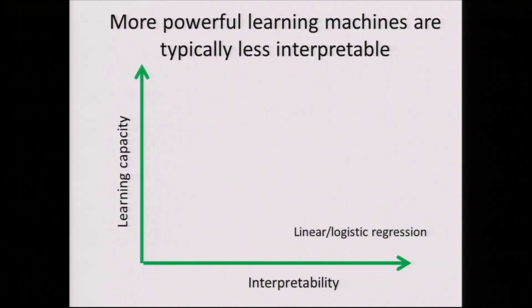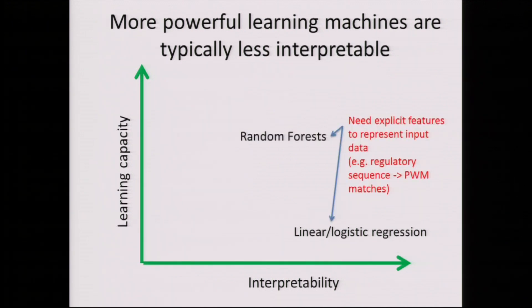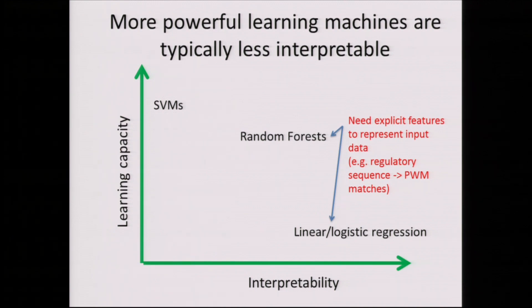Traditionally we think there is a trade-off between the learning capacity of a model and its interpretability. Logistic regression is a fairly simple model, but it's very interpretable because all you have to do is look at the weight vectors. Random forests are somewhere in between. The disadvantage of logistic regression and random forests is that you can't just give them raw DNA sequence — you have to featurize the sequence, such as with a PWM scan, and that comes with its own disadvantages. Support vector machines are very powerful and can learn from raw sequence, but when you introduce kernels, you sometimes compromise on interpretability. Deep learning has traditionally been put in the extreme corner, and the goal of our research is to push it toward interpretability.